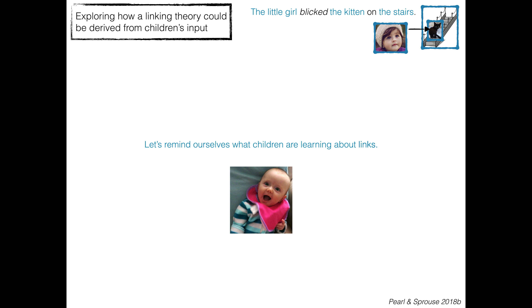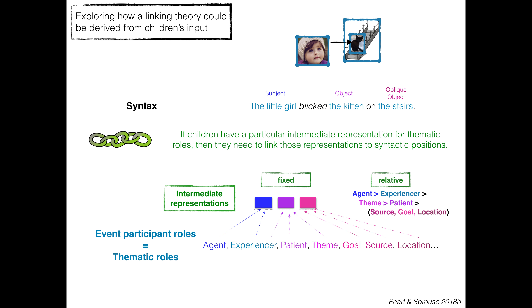Let's remind ourselves what children are actually learning about links. When you have something like 'little girl blicked the kitten on the stairs,' you know something about the syntactic positions — that this is a subject, this is an object, and this is an oblique object — and you're starting with either a fixed intermediate thematic representation or a relative one. If you have a fixed one, you have your thematic roles mapping to one of them. If you have a relative representation, they're all ordered with respect to each other.